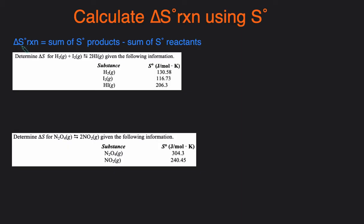The way to do that is by using this equation. The standard delta S of a reaction is equal to the sum of the entropy of the products minus the sum of the entropy of the reactants. Now let's take a look at two examples where we use that equation.